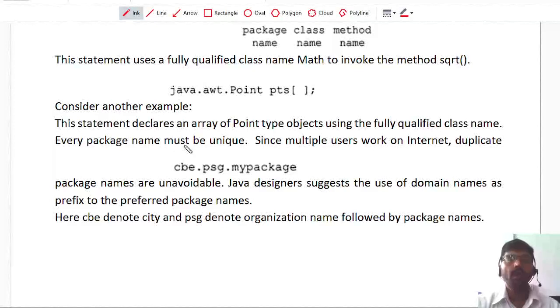Java is mainly used for writing the application for internet. So many developers are creating their own packages and they are sharing their packages in the internet so that the other programmer can use that package. In that case, there is a possibility that multiple programmers or multiple developers give the same name for the package. That means package name could be duplicated in the internet. So at any time there is a duplication, there is an ambiguity, confusion for the developer which package to access from the internet.